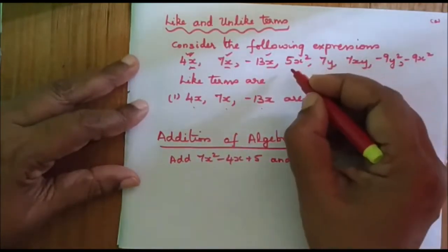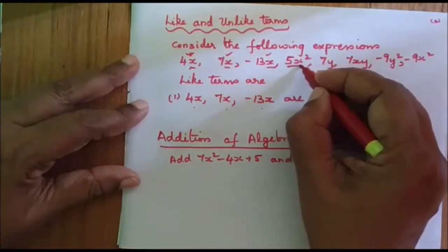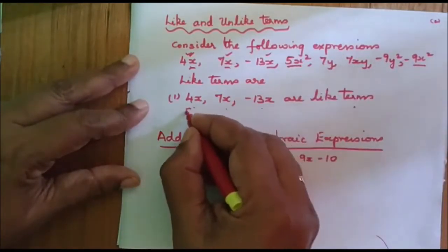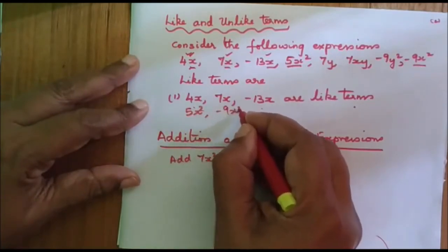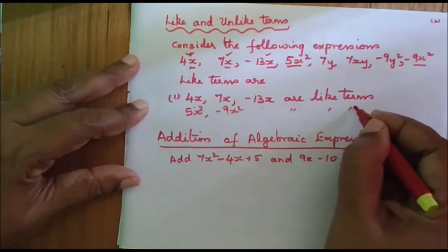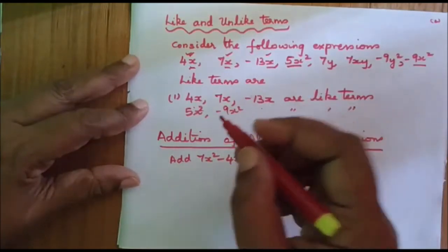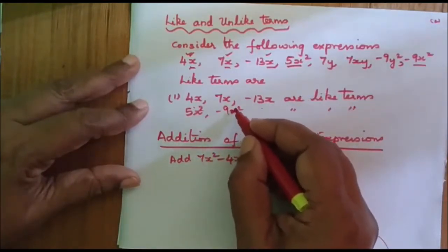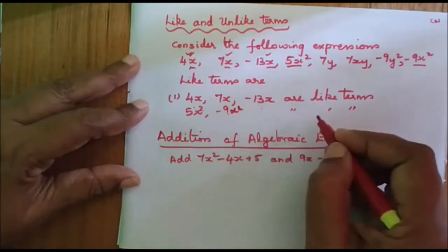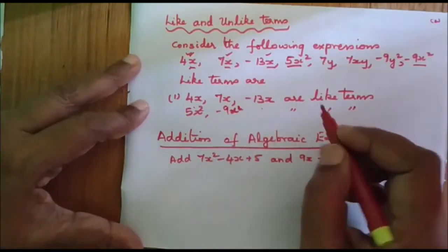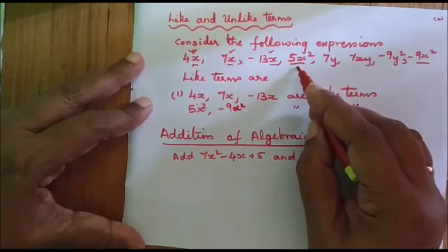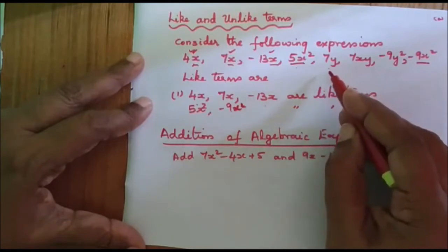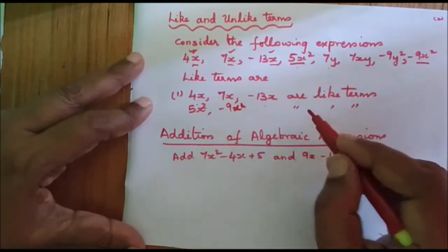Other like terms are 5x squared and minus 9x squared — they share the same variable x squared. If you have the same variable, they are called like terms. For example, 5x squared and 7y are unlike terms because they have different variables. It's very important to identify like and unlike terms.